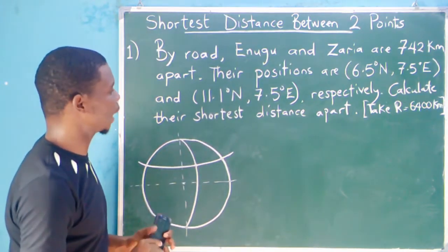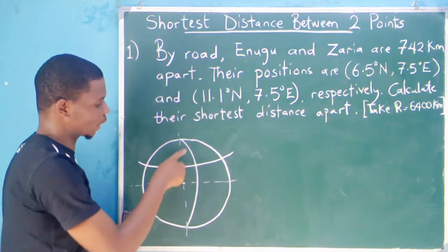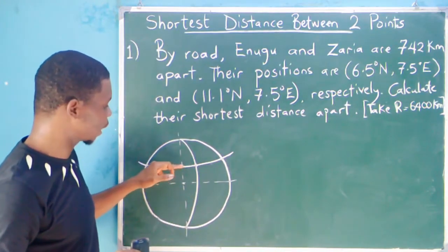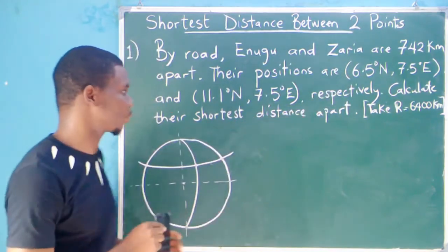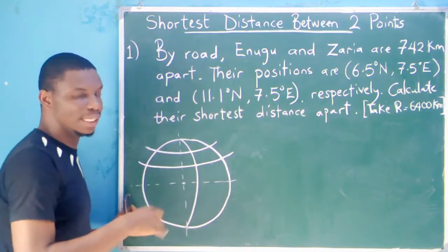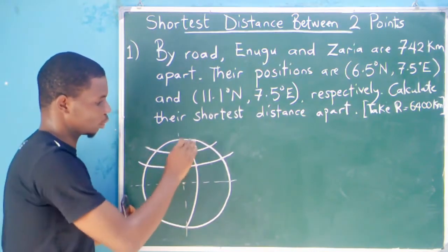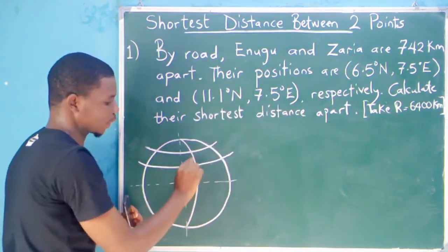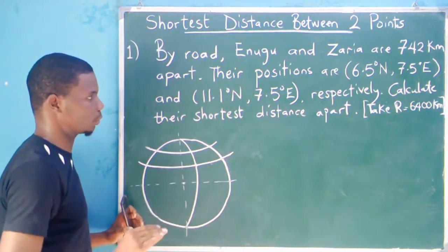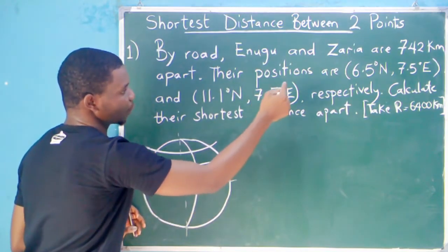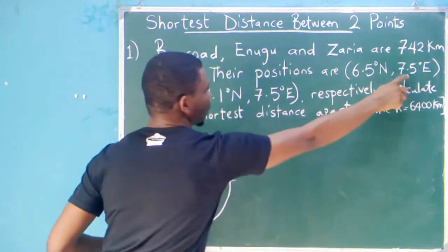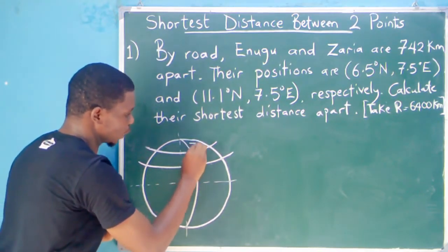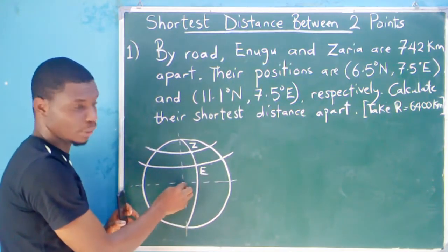Then for Zaria — Zaria is 11.1 degrees north. It means it is above the Enugu line. This one is 6.5 and we are going from 0 to 90, so 11.1 will be on top of 6.5. These markings are not exact; you don't need to make it exact. I'm giving space so that it will be visible — 6.5 and 11.1 need to be a little bit close together in reality. Then 7.5 degrees east is the same as Enugu. So both of them are on the same longitude. This will be our Zaria, and this is our center.